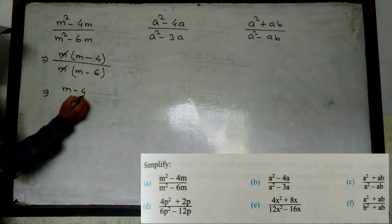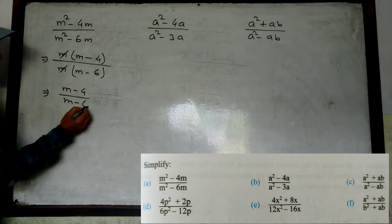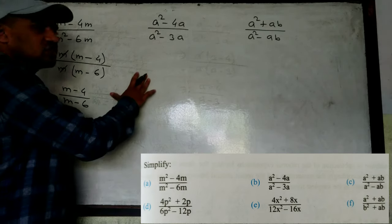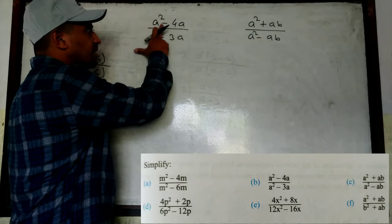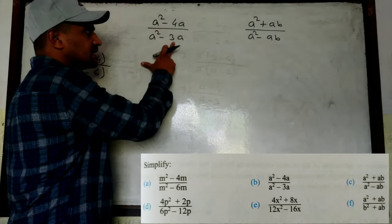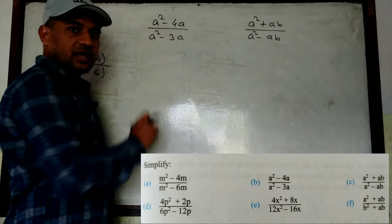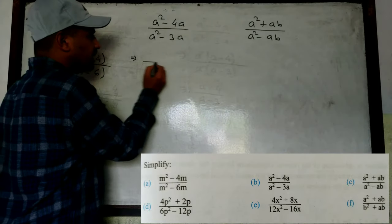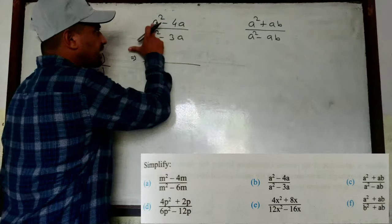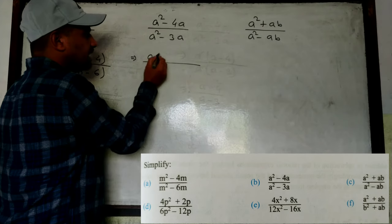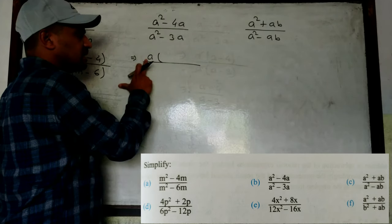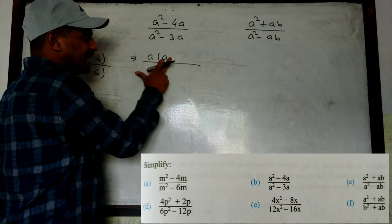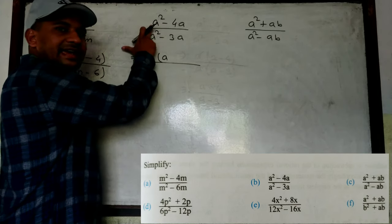M and M cancel, so M - 4 by M - 6 is the answer. Now look at the next one: a² - 4a by a² - 3a. First of all, if there is a common, we have to take common. What is the common from a² - 4a? Common is a. From a², a is common, so what is remaining? a, because a × a = a².